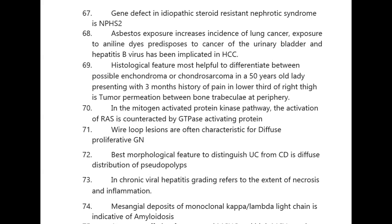In the mitogen-activated protein kinase pathway, the activation of RAS is counteracted by GTPase-activating protein. Villoglandular carcinomas are often causative for diffuse proliferative glomerulonephritis. Best morphological feature to distinguish ulcerative colitis from Crohn's disease is diffuse distribution of pseudopolyps.